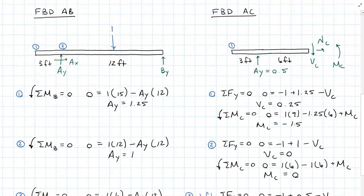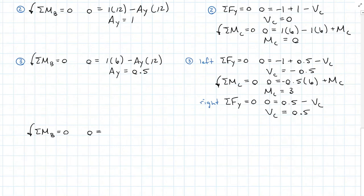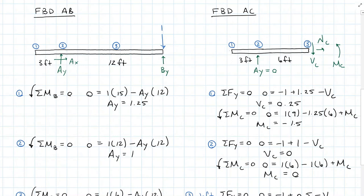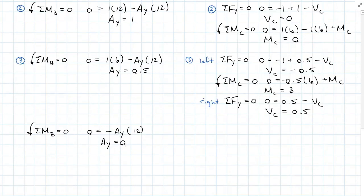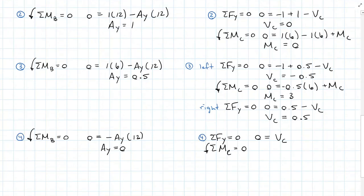Let's move our unit load one more time to over point B. If I sum moments about B, I have A_Y times 12, which means A_Y is going to have zero influence from that load. Plugging that into our free body diagram AC and summing forces in the Y direction, shear C will also have zero influence when the load is over point B. Summing moments about C, we find that moment C is not influenced at all by the unit load when the unit load is over B.